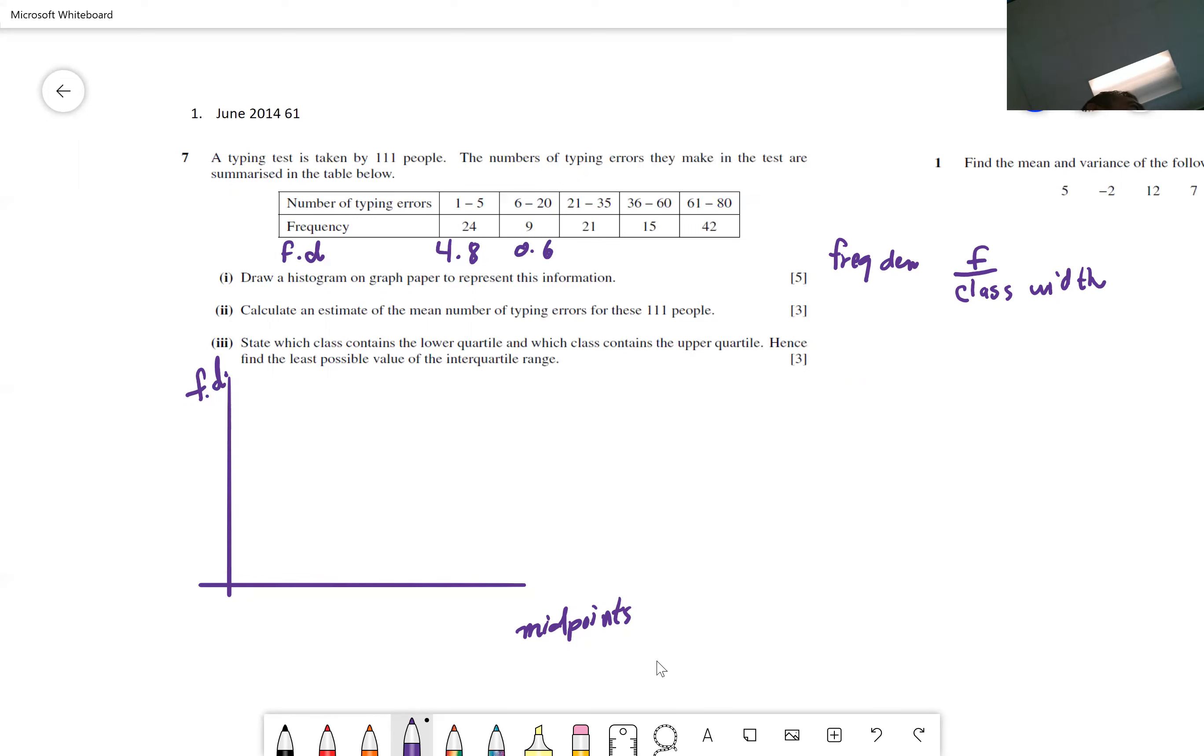So then you take nine and divide it by 15. So this frequency density is 0.6. And this is kind of like a gotcha question. You graphed it, and they're like, we're not going to give you that many points because you didn't do frequency density. And then they'll say, another thing you didn't do, you didn't make sure you adjusted for the gaps between the classes.